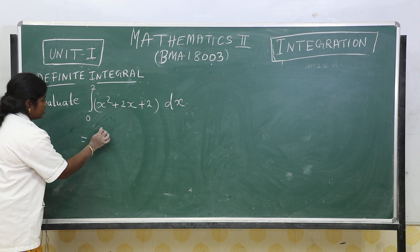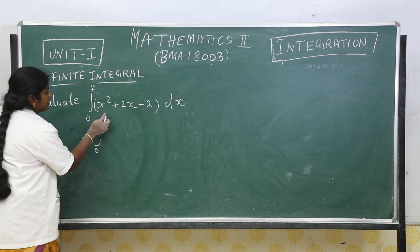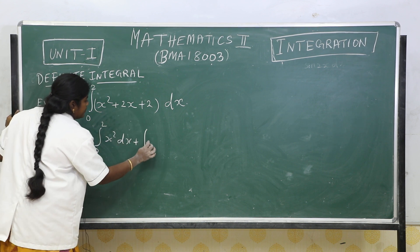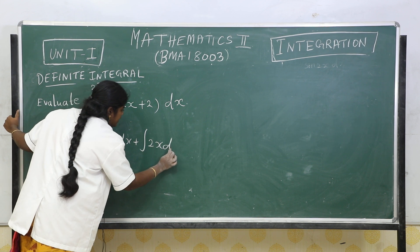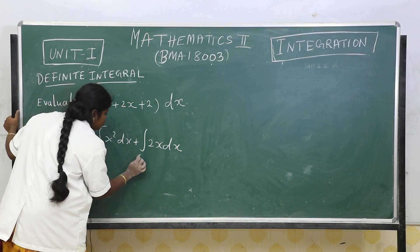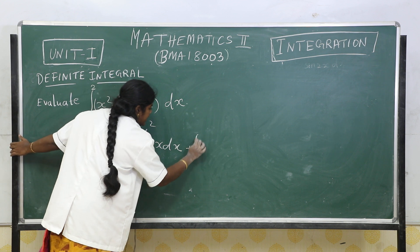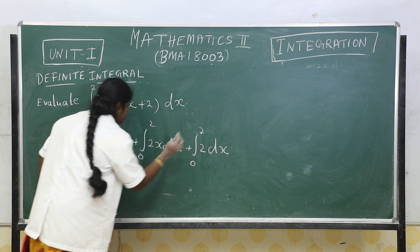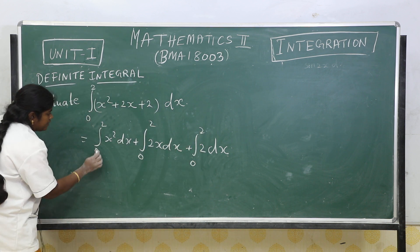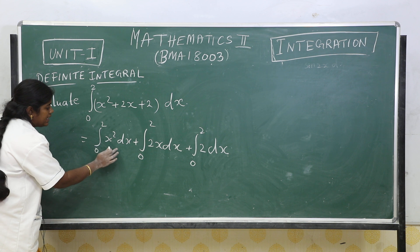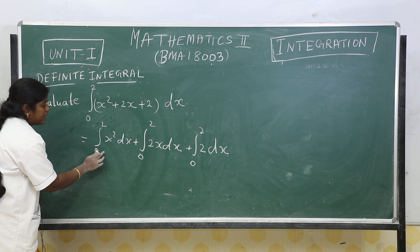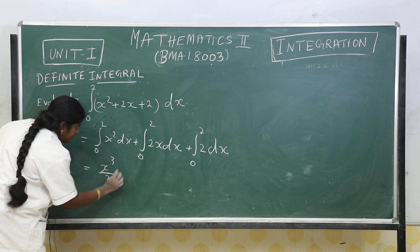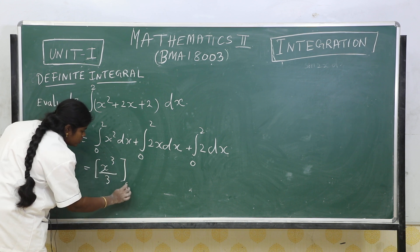First of all, separate the integration term by term: integral from 0 to 2 of x squared dx, plus integral from 0 to 2 of 2x dx, plus integral from 0 to 2 of 2 dx. For x squared, using the power rule — integral of x to the n dx equals x to the n plus 1 divided by n plus 1 — therefore x cubed divided by 3, with limit 0 to 2.